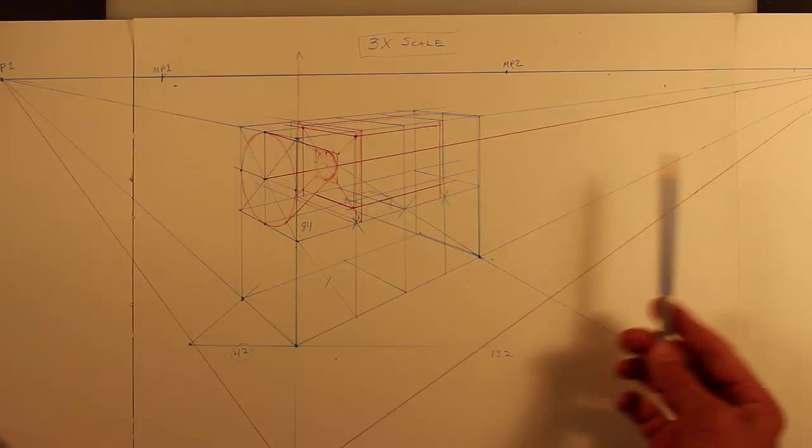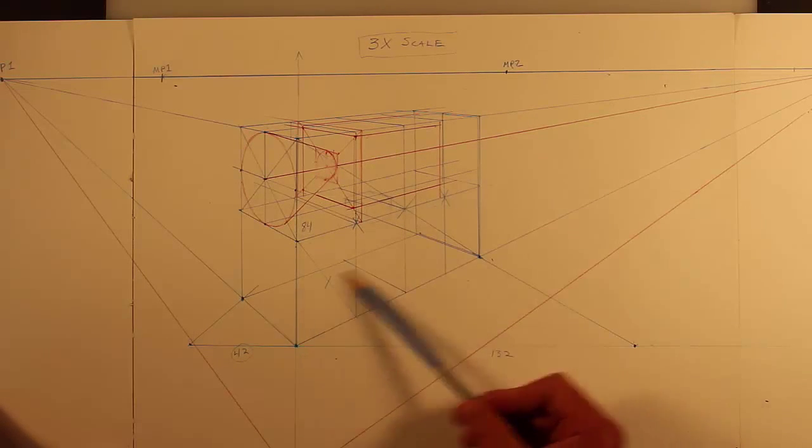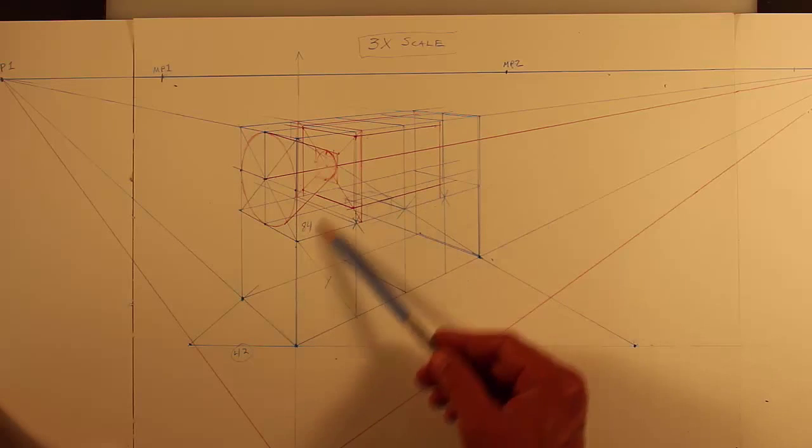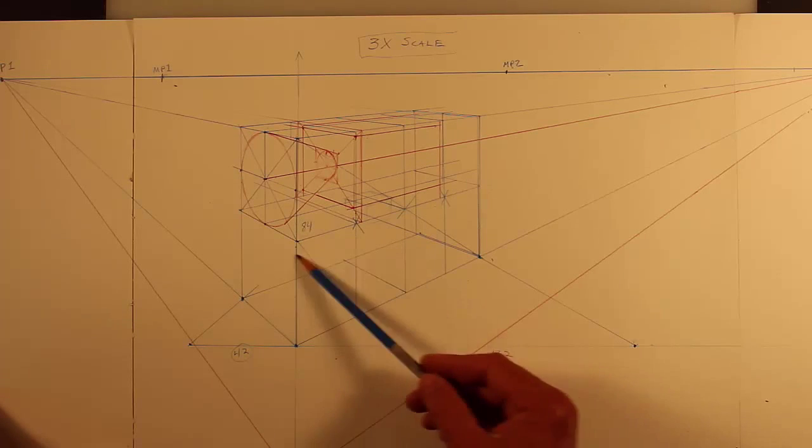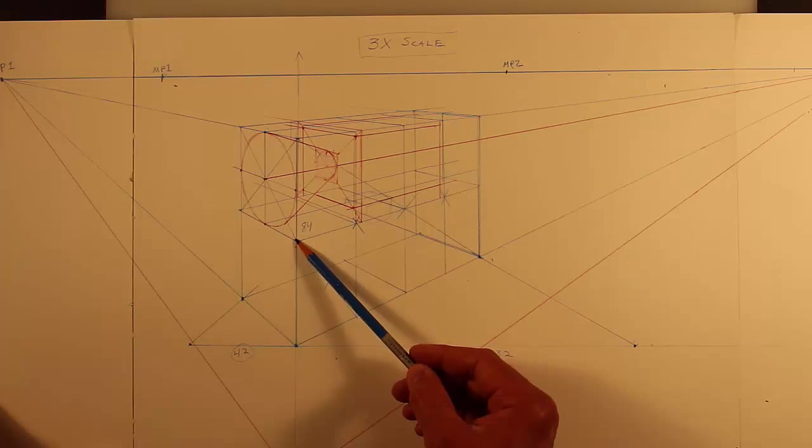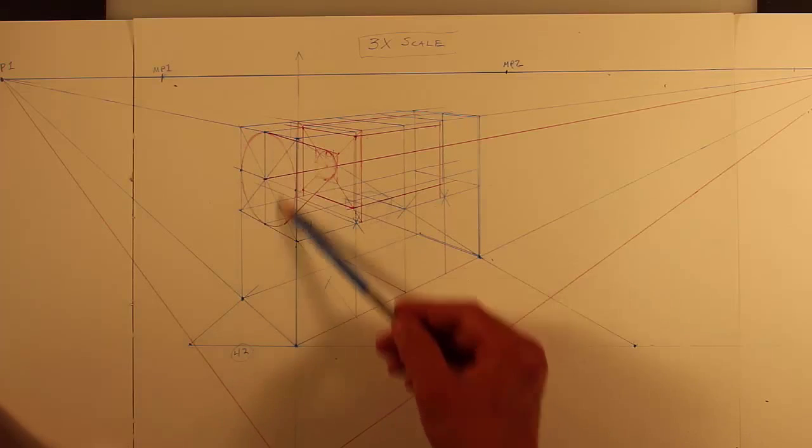And so again, you do the center, find the centers, divide it into sections. I would suggest dividing it into this face, like 16. Notice these aren't cubes, these are rectangular prisms. This is a cube relationship here.